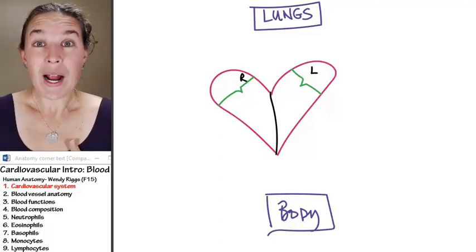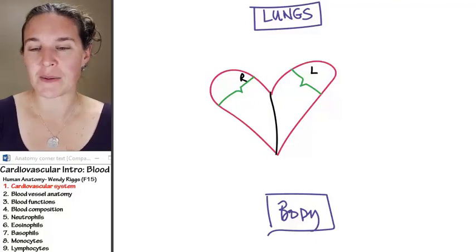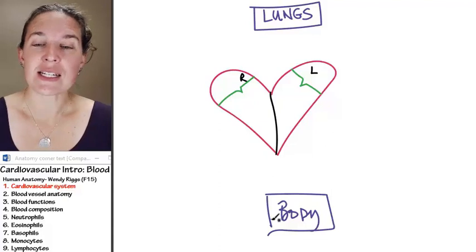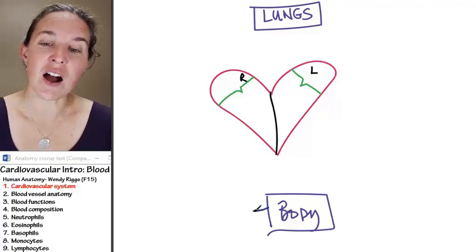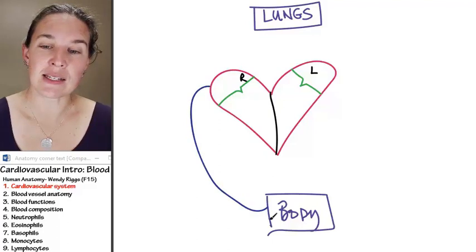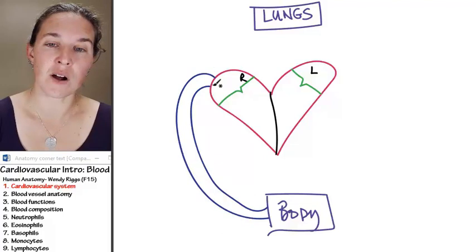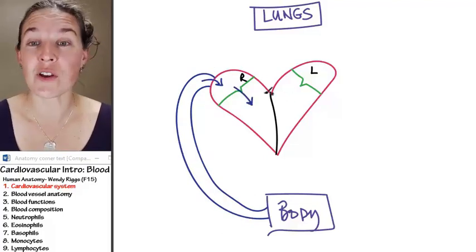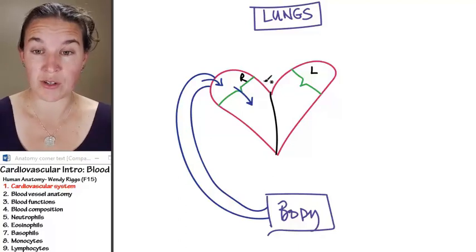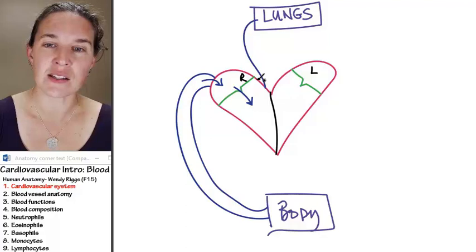First of all, the right side of the heart is dealing in, I call it dirty blood. The right side of the heart takes deoxygenated blood from the body and brings it into the heart and it travels through the ventricles, through the two chambers of the heart, and then it heads out into the lungs.